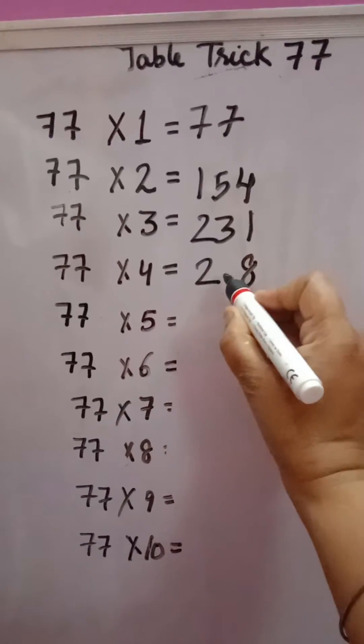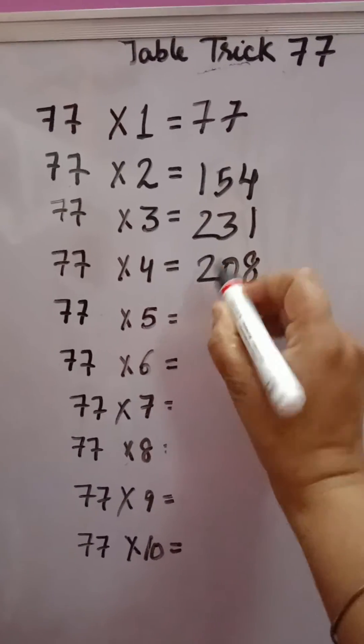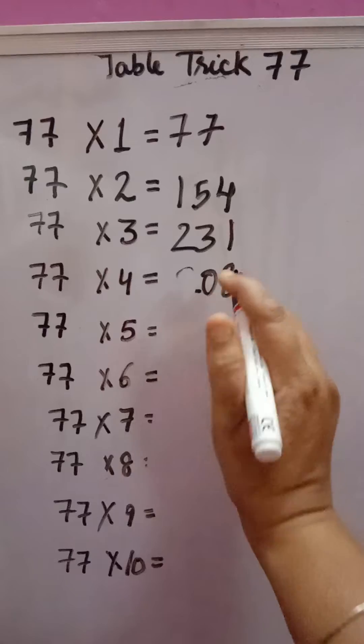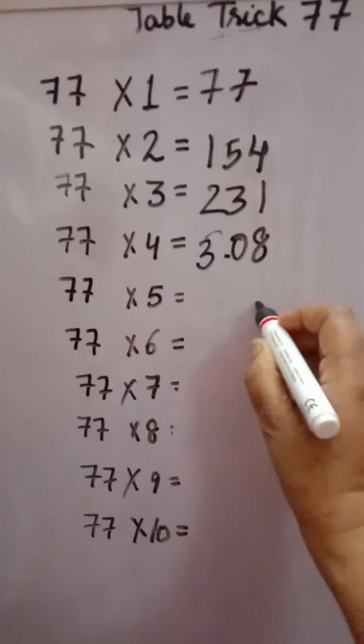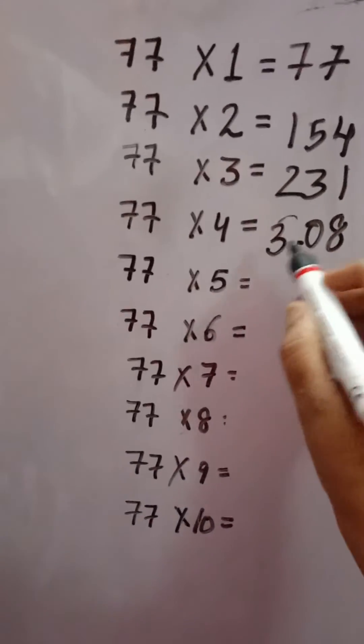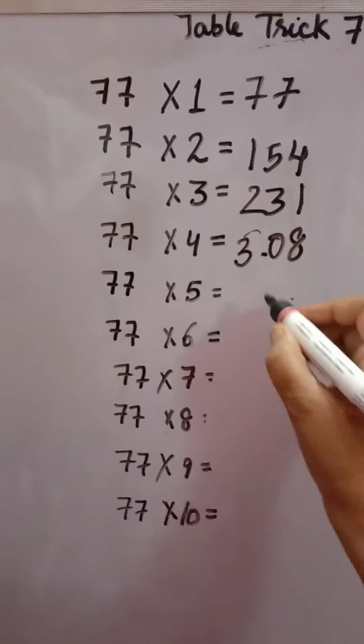Now 8 plus 2 is 10, so 0 will come here and 1 will be carried. 2 plus 1 will come, 3. If 1 digit is coming, write as it is. If a 2-digit number is coming, carry the 1.